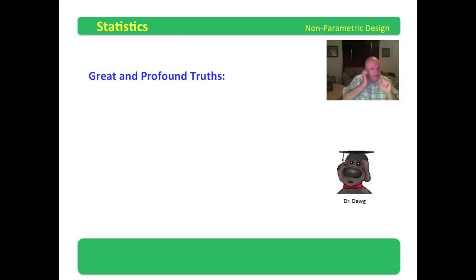There are some great and profound truths about the distributions that you need to know. First of all, Likert scales are generally not normally distributed. You know, you go out on a scale of 5 to 1 with 5 being the most satisfied and 1 being the least satisfied. Rate your satisfaction with this instructor.